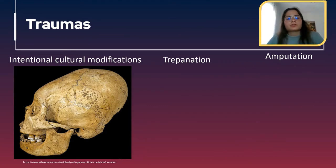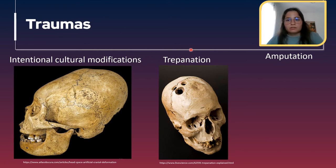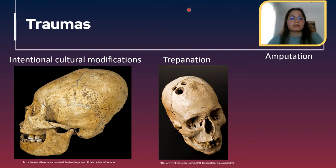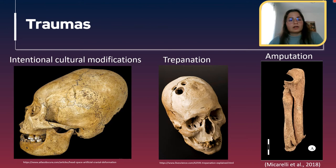Other traumas can be intentional cultural modifications, as you can see in this skull — this is not the normal form and we know it was modified, a practice done in some cultures. Usually these modifications are done in childhood because the skull is more elastic then. Then we have trepanations — holes in the skull considered to be the first kind of skull surgery. Some parts here show bone responding, meaning the individual was alive and healing when they died, so we know they survived some time after the intervention. Some authors believe these holes were made to release demons, probably in people with mental diseases. Lastly, another kind of trauma is amputation — here you can see the ulna and radius, both of which were cut.